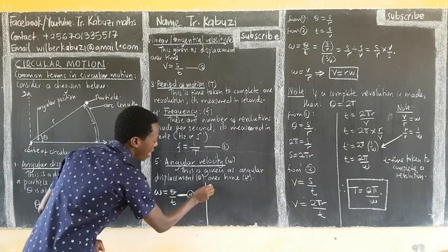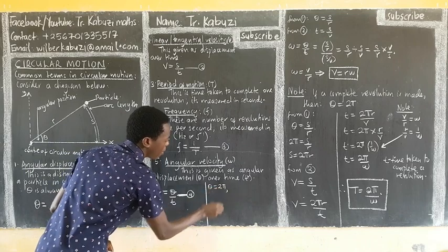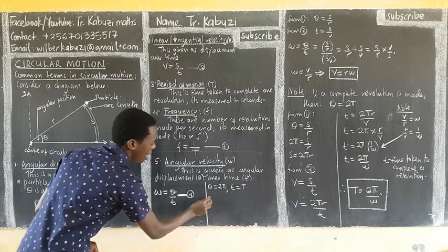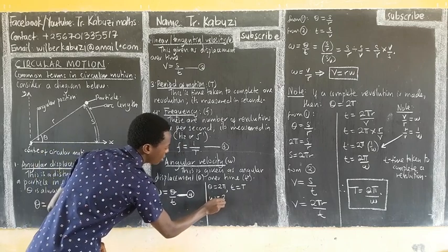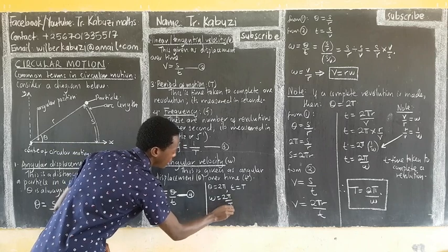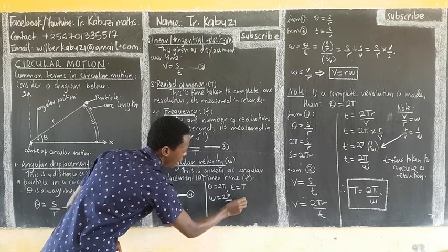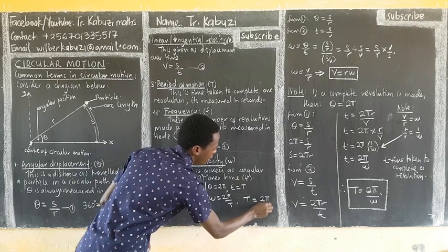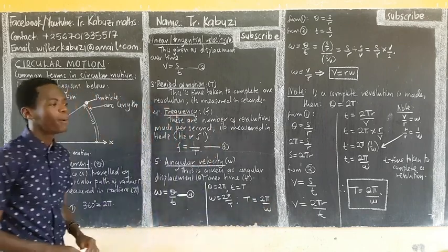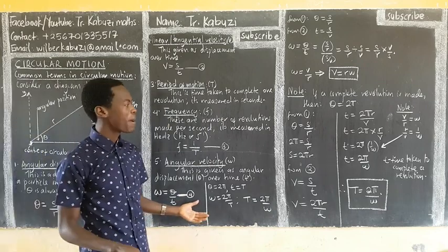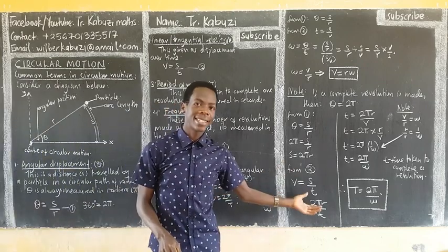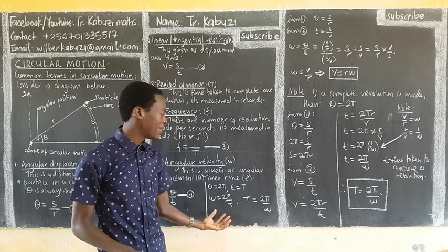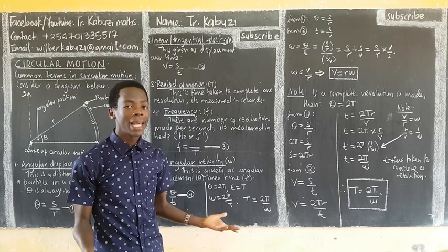For the shorter method: if theta equals 2π, then the time t becomes the period T. So omega equals 2π over T directly — as you can see, that one step gives the same result. I want to exercise your understanding, but both methods lead to the same answer.